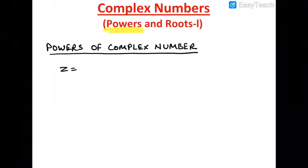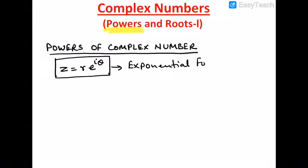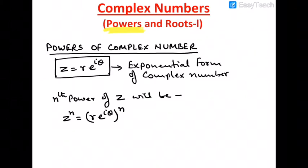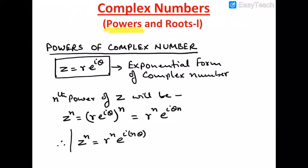The exponential form of a complex number is z equals r e to the power i theta. If we take the power n, then the nth power of z will be z to the power n equals r e to the power i theta to the power n. We can separate this and get r to the power n, e to the power i theta n. Therefore z^n equals r^n e to the power i n theta.